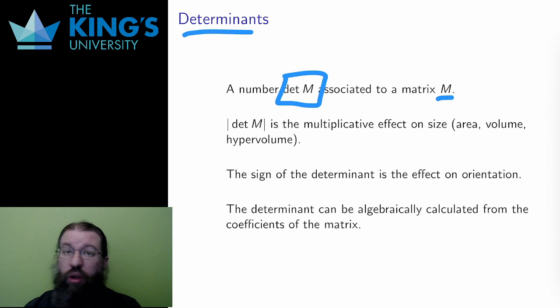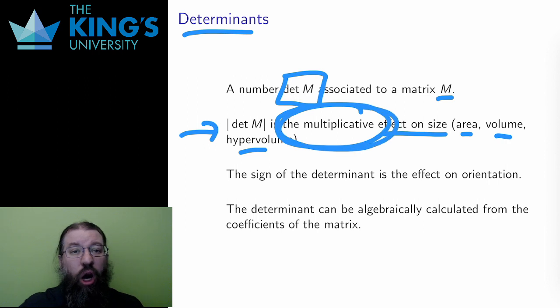First, its absolute value, the number ignoring whether it is positive or negative, measures the effect on size, on area, volume, hypervolume, depending on the space I'm in. The effect is multiplicative. All sizes and areas are multiplied by this determinant of M factor. Note, this means that all linear transformations actually have a multiplicative effect on size.